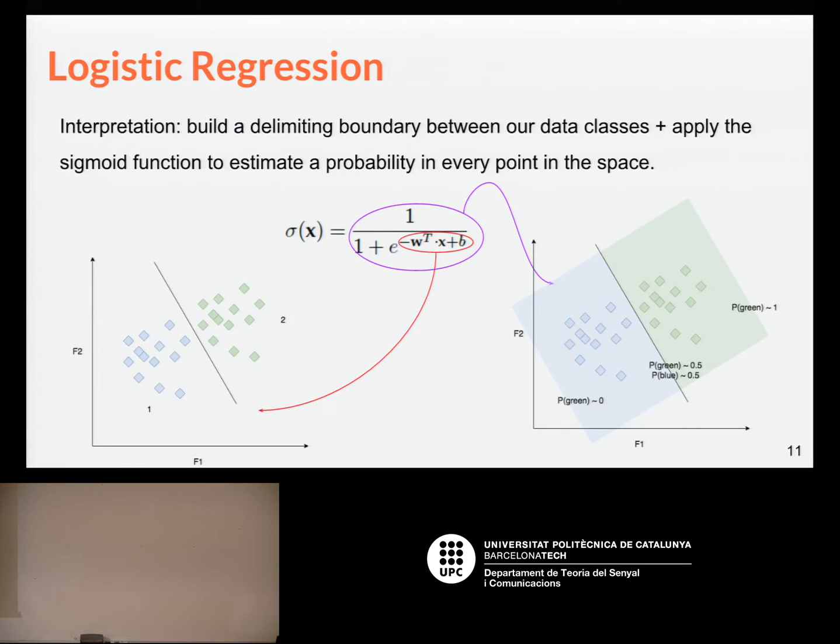So, what we would have is, in the logistic regression approach, having the clouds of data points for the two classes, we'll define with this linear equation the boundary between the classes. The weights would be the orientation of this boundary. Let's imagine not a line, but a hyperplane in many dimensions. So, this orientation, and the bias would be the offset we have for this plane to be moved. And then we place the sigmoid transformation, and this becomes a probability hypersurface.